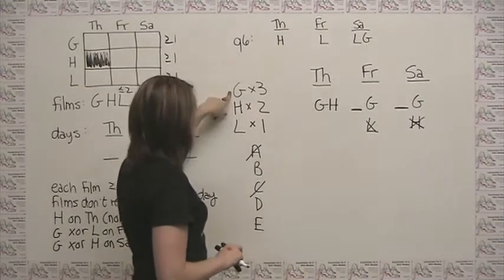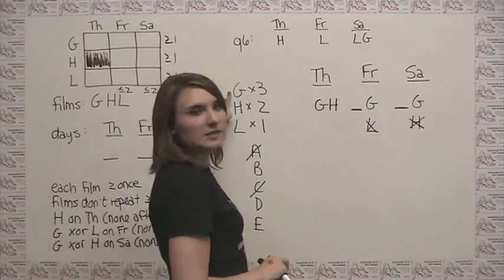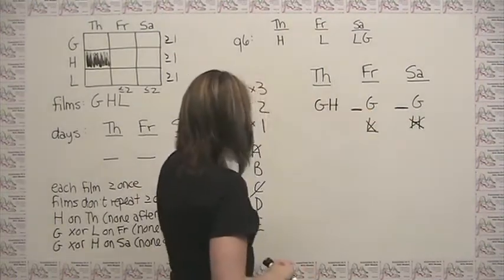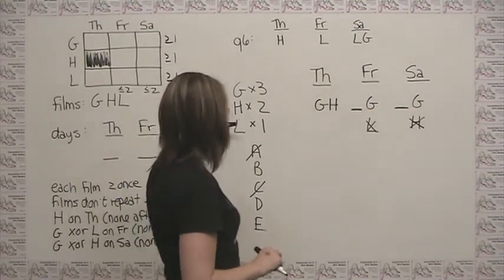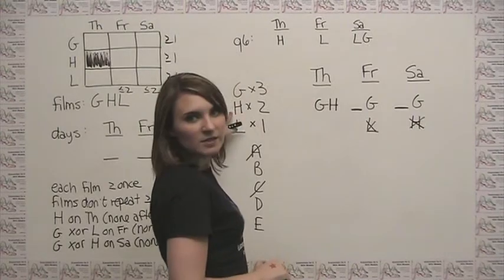We utilized this information of G going three times, which is how we started the problem, but we didn't address these other two pieces here. So if we think about this now, we say, well, H has to go twice.